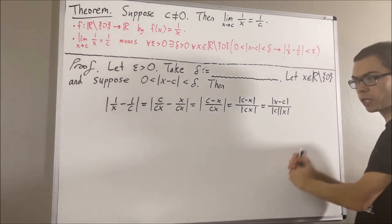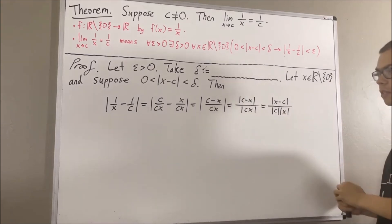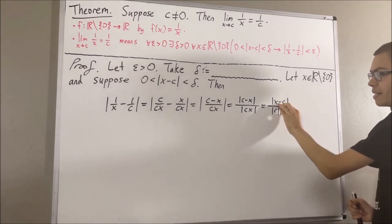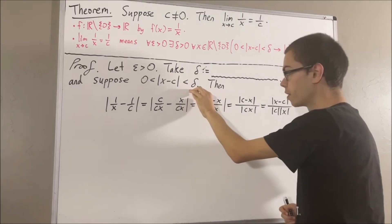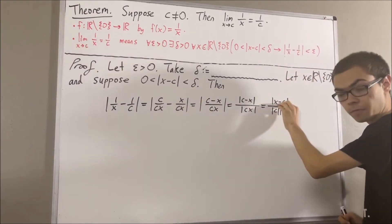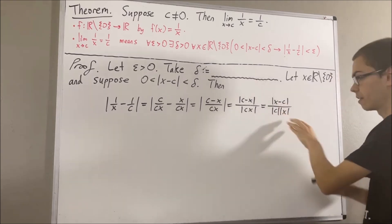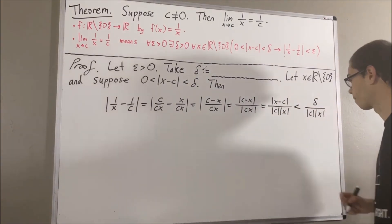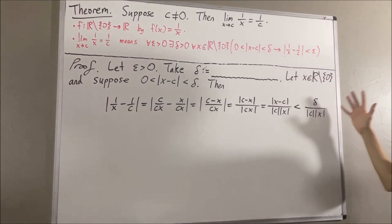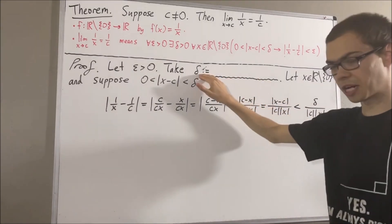So at this point, we've re-expressed this guy equivalently as this. Now, we know that the absolute value of x minus c is less than delta. So, this guy must be less than delta over the absolute value of c times absolute value of x. Okay, but what should we do from here? Well, maybe we should start thinking about how we should define delta.